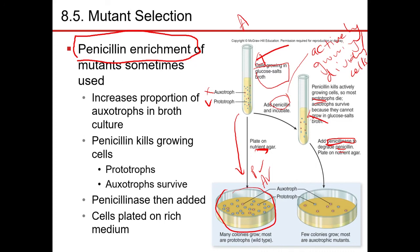Initially you have more prototrophs than auxotrophs — on the plate, the prototrophs are the blue circles and the auxotrophs are the pink circles. But after penicillin enrichment, you have more auxotrophs than prototrophs; the ratio has shifted. Comparing colonies between both plates, you will have far fewer colonies after penicillin enrichment, and the majority of those colonies will be the mutants — the auxotrophs — whereas on the pre-enrichment plate, the majority would be prototrophs. That is penicillin enrichment.